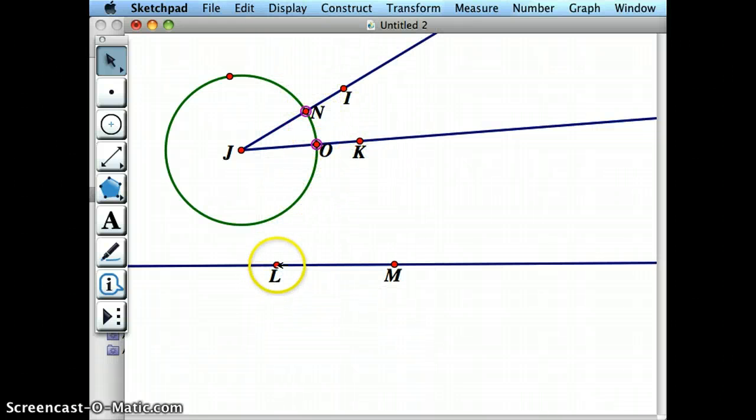I need to create a circle from L that's the same length as JN, as the same radius as this so that I have the same equivalent circle down here. Well, in order to do that, I need to have a segment that I can use, a radius that I can use to create the circle down here. So I'm going to go ahead and go from J to N and that's going to be my radius.